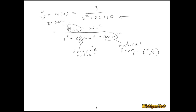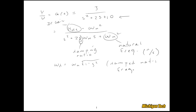We also have another quantity that we can construct from ζ and ωn, and we denote that as ωd. That's ωn times the square root of 1 minus ζ squared. And we call that the damped natural frequency.